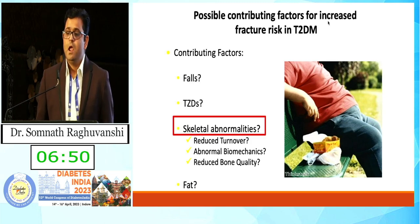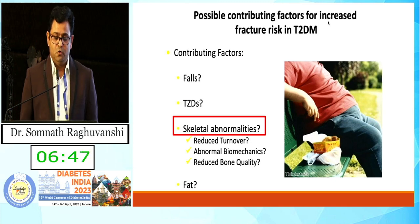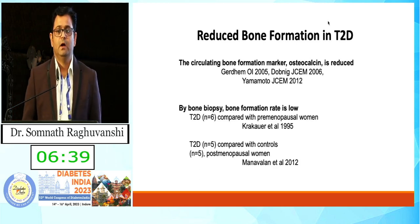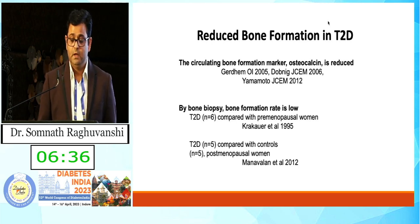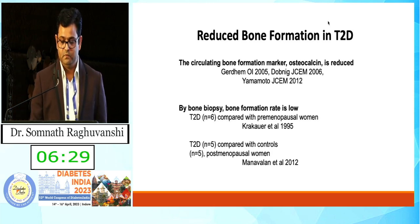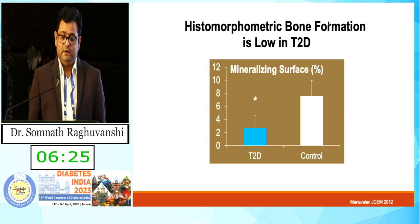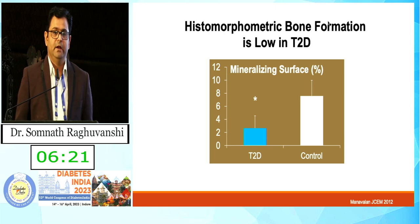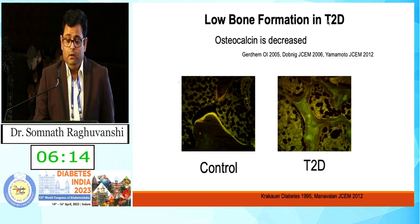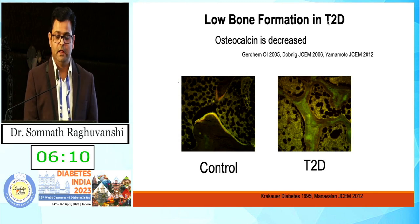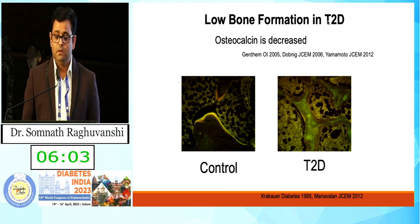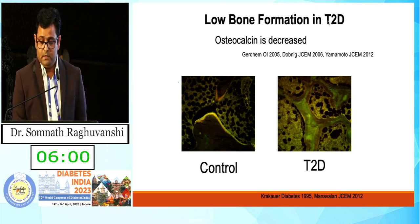Thiazolidinediones appeared after 2002, but studies still showed fracture is higher in type 2 diabetes with osteoporosis. So there must be other factors beyond thiazolidinediones — perhaps reduced bone turnover, abnormal biomechanics, or reduced bone quality. Osteocalcin, a marker of bone formation, is reduced in type 2 diabetes. Bone biopsy showed low rate of bone formation and lower remodeling in studies from 2006 to 2012. There is also reduced cortical surface mineralization and reduced rate of mineralization in type 2 diabetes compared to age-matched controls.